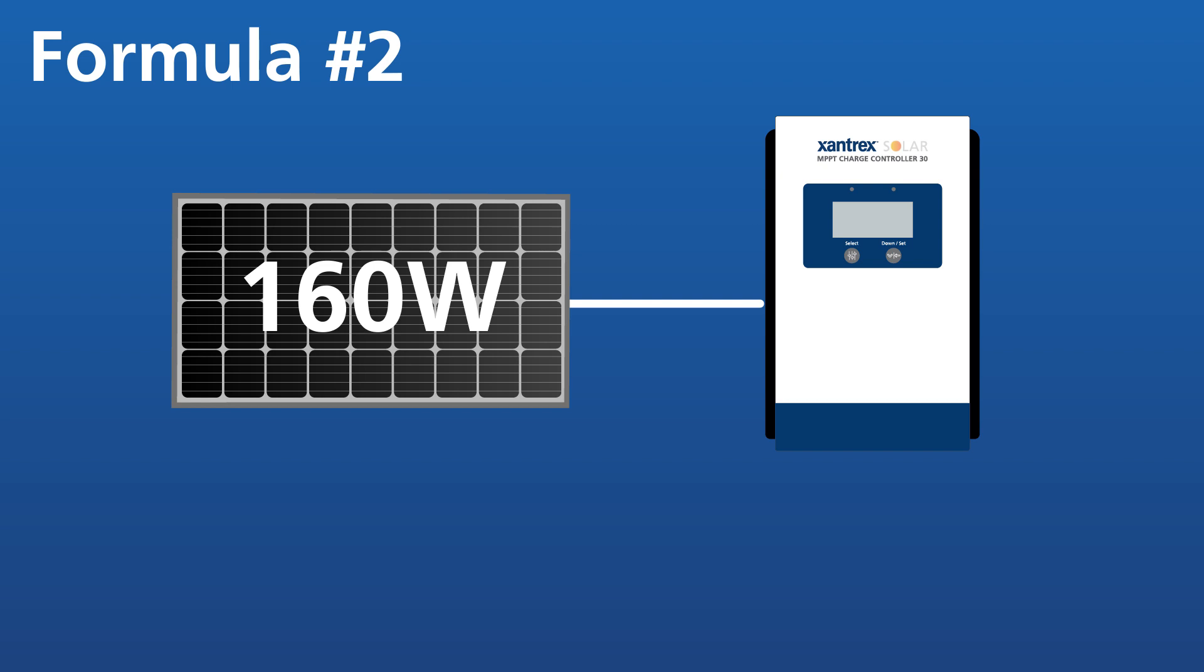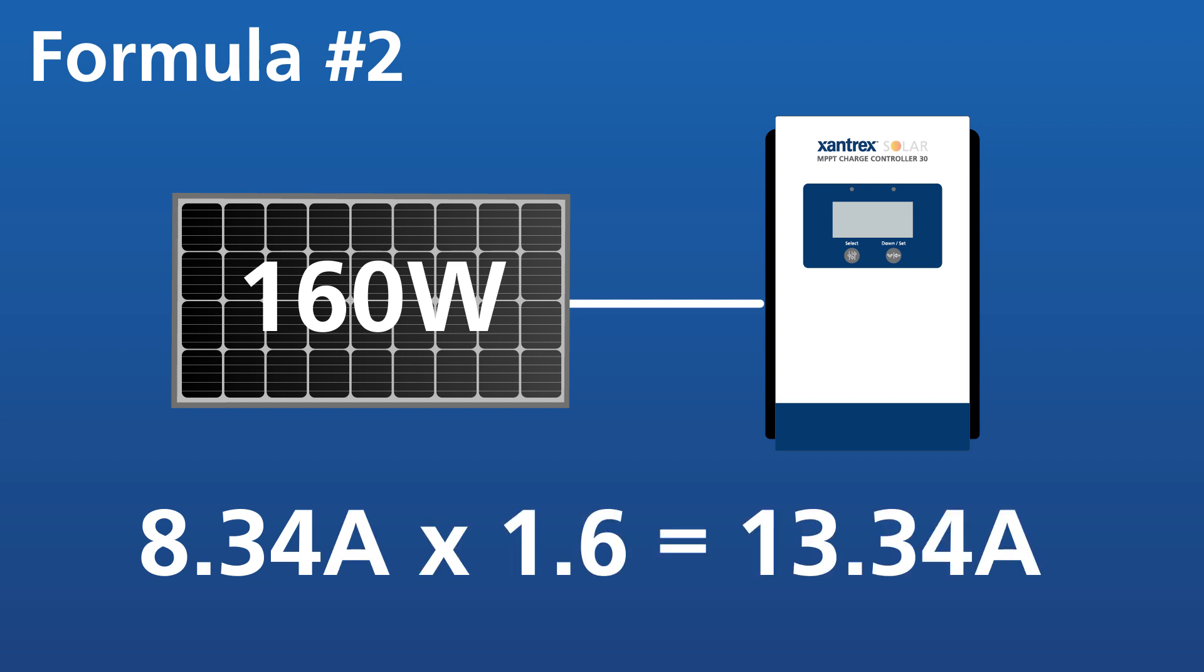Formula number two, using an MPPT charge controller connected to a 160-watt panel. With an MPPT, the panel voltage also lowers from 19.2 volts to 12 volts, but the charging current is up converted by the same ratio that the voltage was down converted by. 19.2 volts divided by 12 volts equals 1.6. Charging current increases by a ratio of 1.6, so 8.34 amps multiplied by 1.6 equals 13.34 amps.